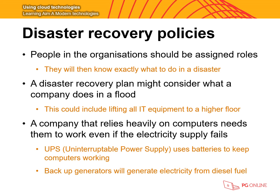A disaster recovery plan might also consider what a company could do in specific events. For flood risk, this could include moving IT equipment to a higher floor — for example, in a 17-floor building, moving equipment from floors 1–10 up to floors 11–17 to reduce the chance of water damage. For companies that rely heavily on computers and need them to work even if electricity fails, a disaster recovery policy may include investing in a backup generator that operates on diesel fuel.